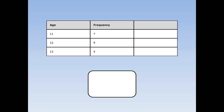To find the median, the first thing I need to do is work out the cumulative frequency. The cumulative frequency says how many people at this point or below. How many people were age 11 or lower? Just the people who are 11 — that's 7. How many people were age 12 or below? It's all the people who are 11 and all the people who are 12: 7 plus 9 is 16. How many people were age 13 or below? 7 plus 9 plus 4 equals 20. Notice that this final cumulative frequency is also the same as the total number of people.